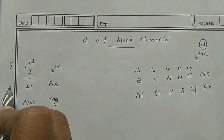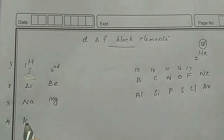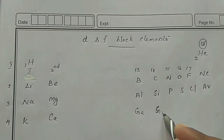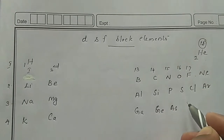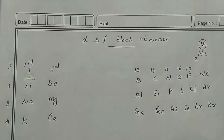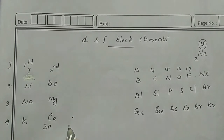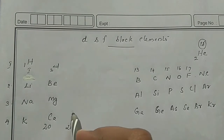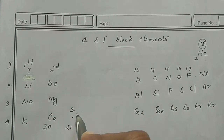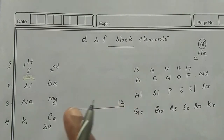The first period, second period, third period, and fourth period elements include: lithium, sodium, potassium; boron, aluminum, gallium; carbon, silicon, germanium; nitrogen, phosphorus, arsenic; oxygen, sulfur, selenium; fluorine, chlorine, bromine; helium, neon, argon, krypton. Groups 3 to 12 are the D block, with elements from groups 3 to 12 in each period.